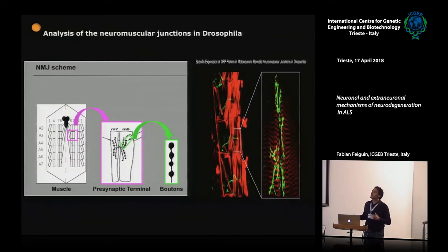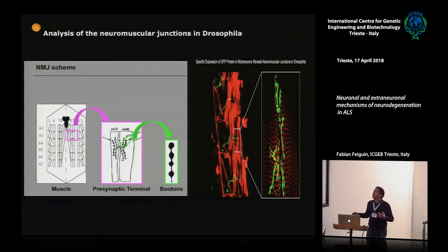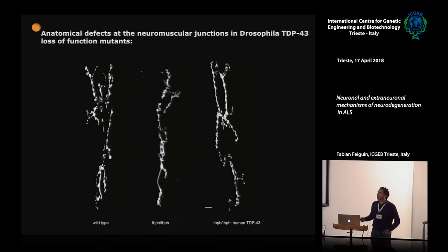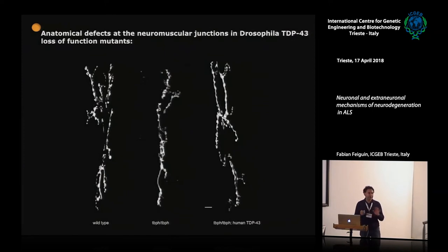What would be the origin of this locomotive problem? We looked at the neuromuscular junctions — the synapses that motor neurons form in muscles in larvae. Labeled with GFP are the motoneuron nerves forming terminals. We found that wild type neuromuscular junctions have a certain distribution and area of synapses in the muscles, but TBPH mutants present a reduced pattern of synapses — less innervated, less branched, with fewer synaptic boutons.